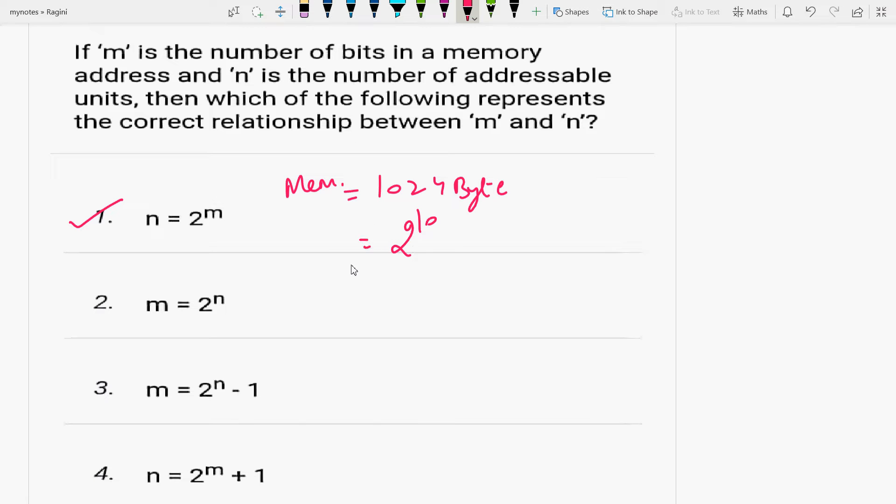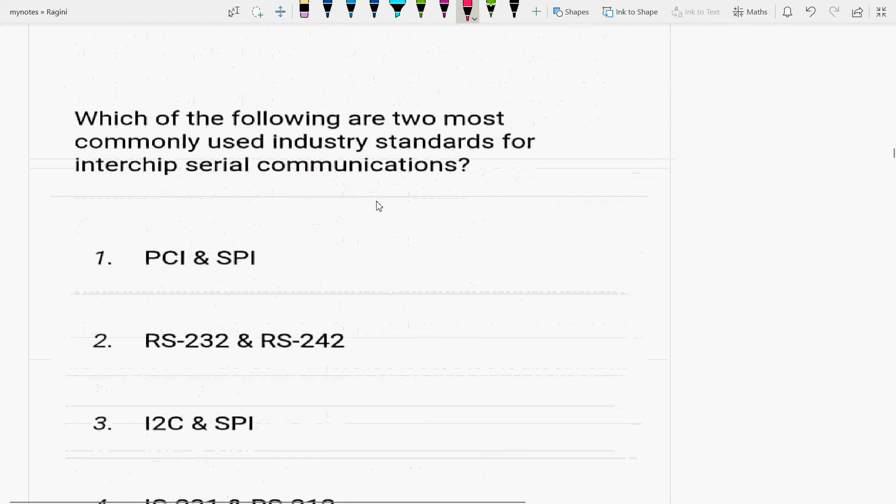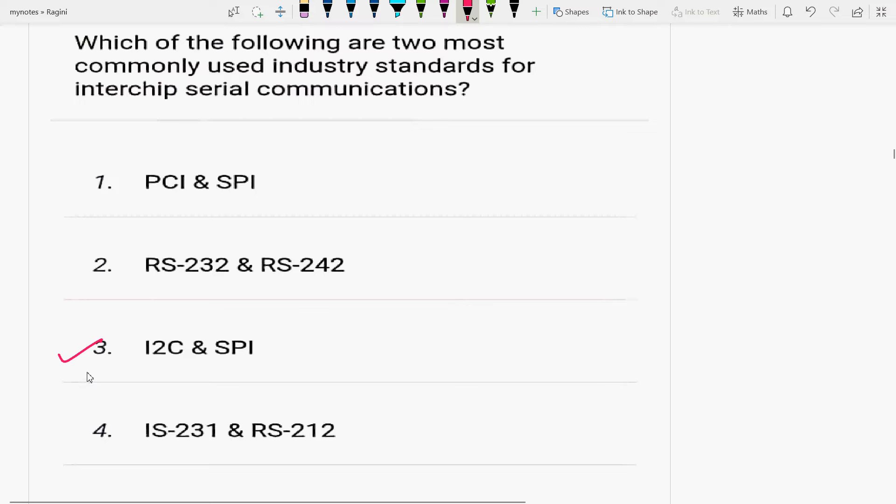Next question: which of the following are two most commonly used industry standards for interchip serial communication? The answer is I2C and SPI. Why? Because SPI means Serial Peripheral Interface, and I2C means Inter-Integrated Circuit.